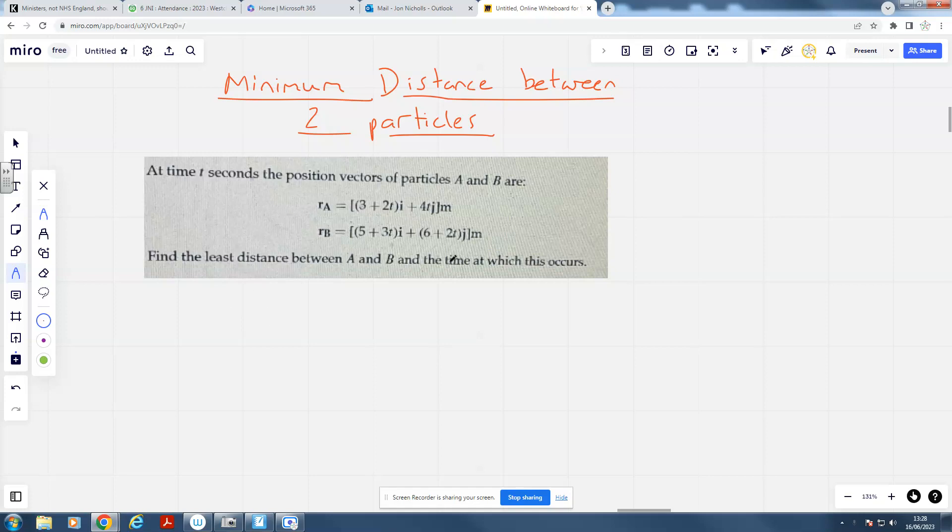Now, first thing I'm going to do - I hate INJ notation, so if you don't mind, I'm just going to write it in a completely different notation. 3 plus 2t is your x-coordinate, and 4t is your y-coordinate. What this means is that this particle A is starting off at (3, 0). When t is 0, you're at the point (3, 0).